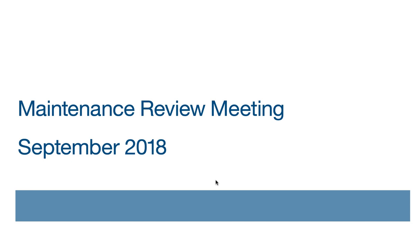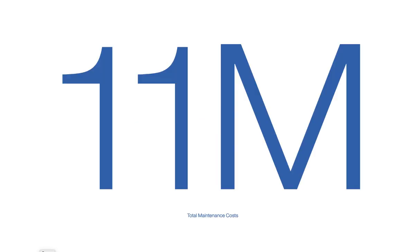This is Cognos working to show you this storybook. We're reviewing our maintenance history — I want to grab our management team's attention. We're spending 11 million dollars in maintenance cost. Where is that money coming from?